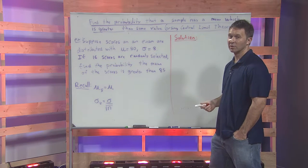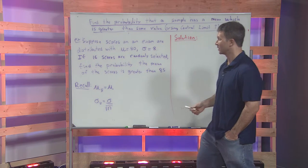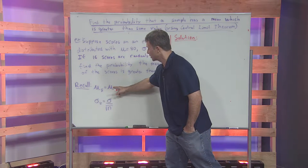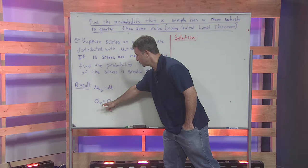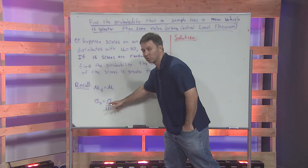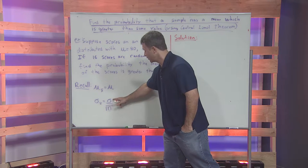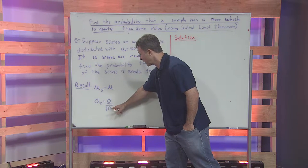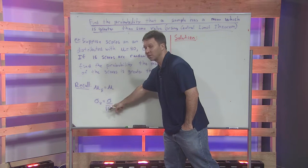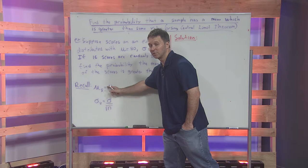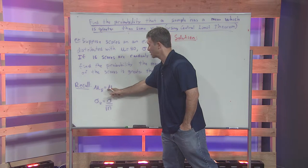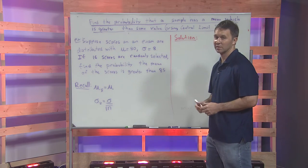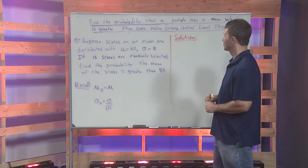Two things you need to memorize: the mean of the means is equal to the original mean, and the standard deviation of the means is equal to the original standard deviation divided by the square root of n. You need to memorize these two facts when you're applying the central limit theorem.